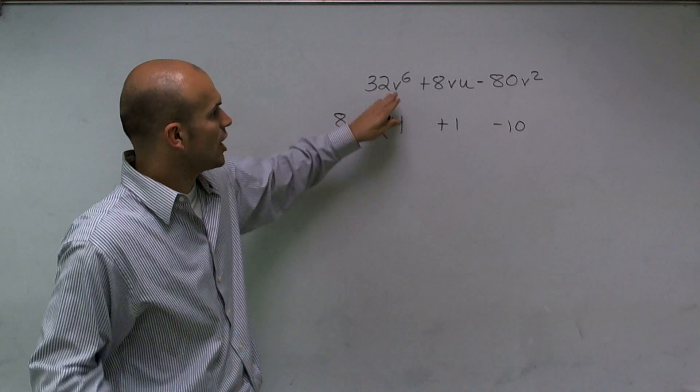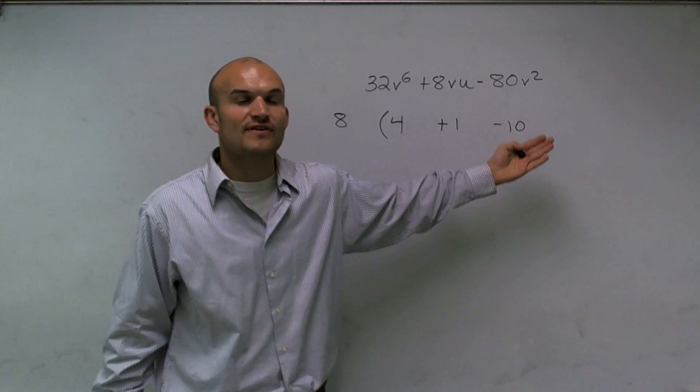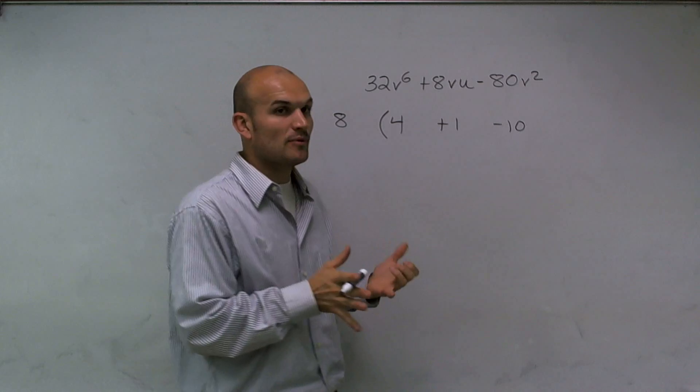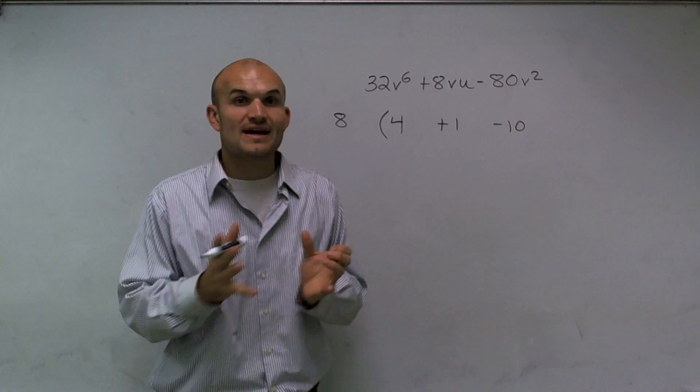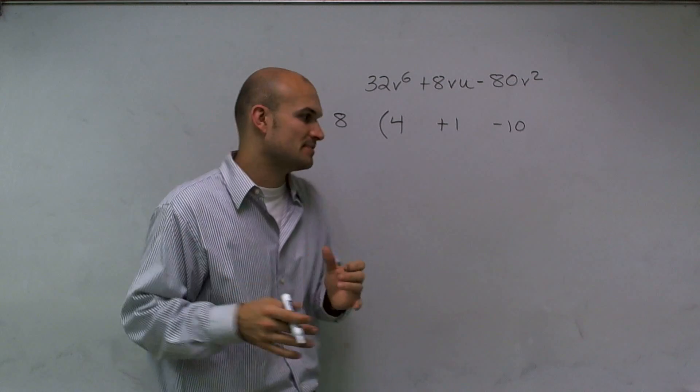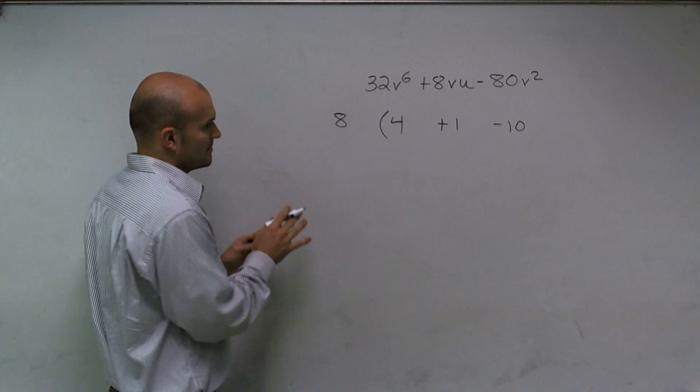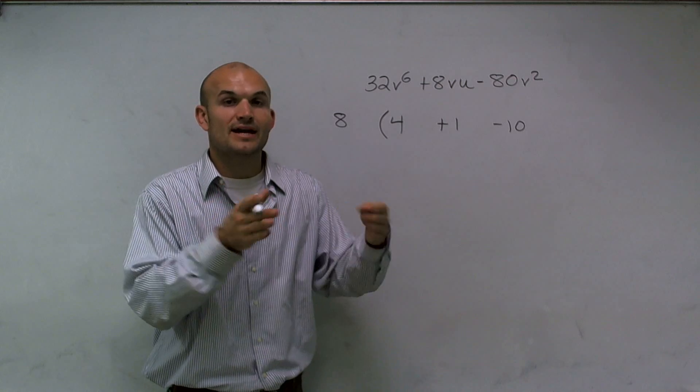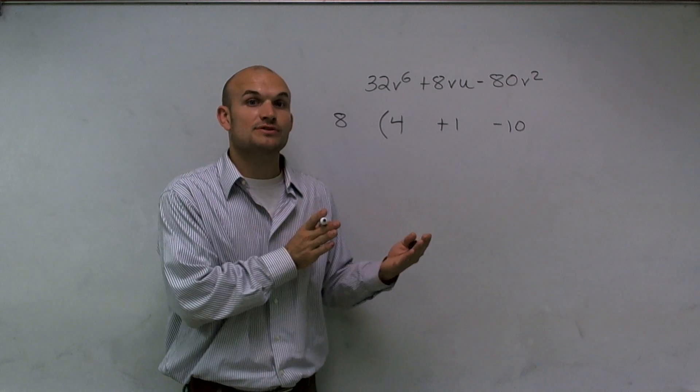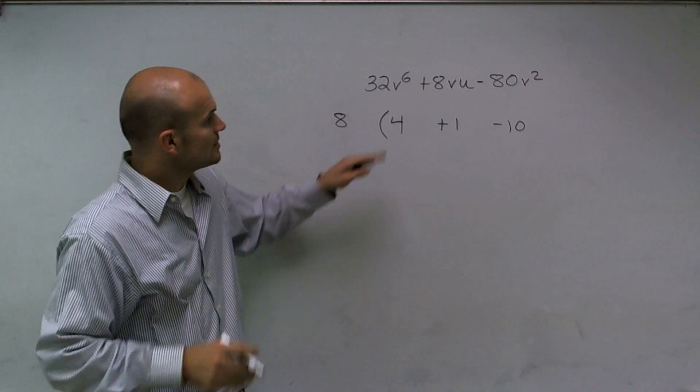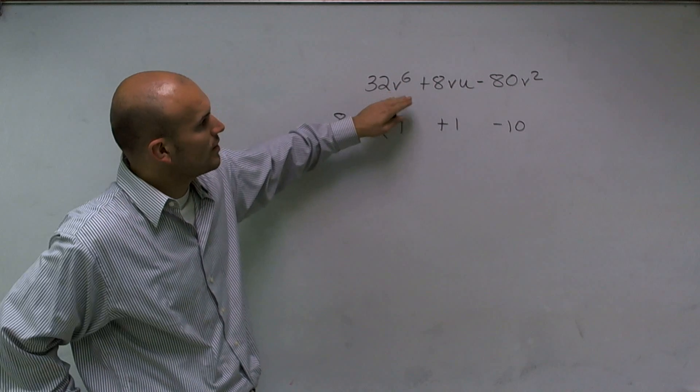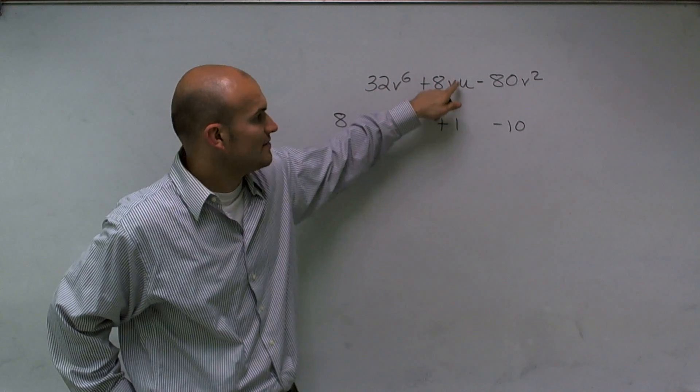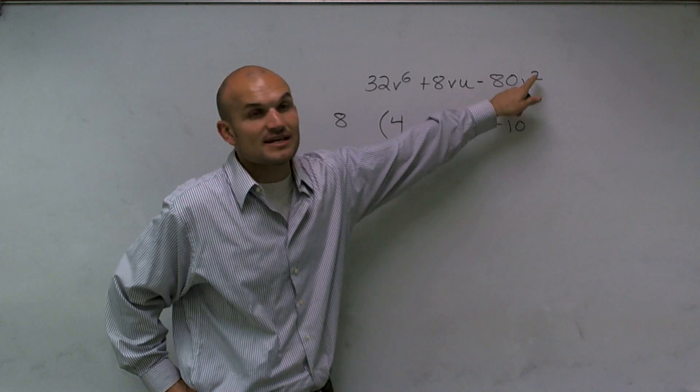Now, the next thing we need to do is look at our variables and determine is there a variable that we can factor out as well that they all share. And remember, we have to use our rules of exponents when we're factoring out of variables. Because the rules of exponents say if you're multiplying exponents, you add them up. And if we're going to divide out, then we're going to subtract the exponents. So here, I look at what variable do they all share? Well, here has a v to the 6. Here I have a v and a u. And here has a v squared. Well, since they all share a v, I know I can factor out a v.